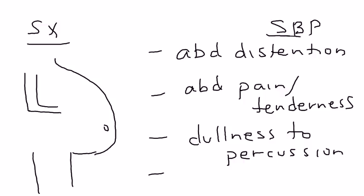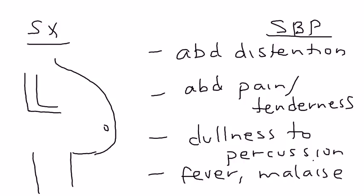Another important physical exam finding is dullness to percussion. When you ask the person to turn to the side and you tap the abdomen, it's very hard because of that fluid accumulation. When SBP develops — an infection of that ascitic fluid — you can also develop fever and malaise, and the person's hepatic failure can worsen as a result. If a person with ascites comes to the ER with fever, malaise, and worsening abdominal pain, those are pretty diagnostic symptoms and signs.